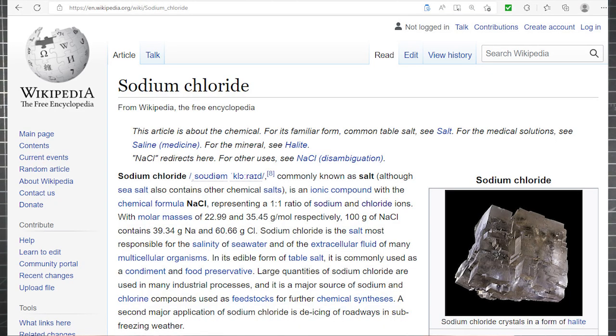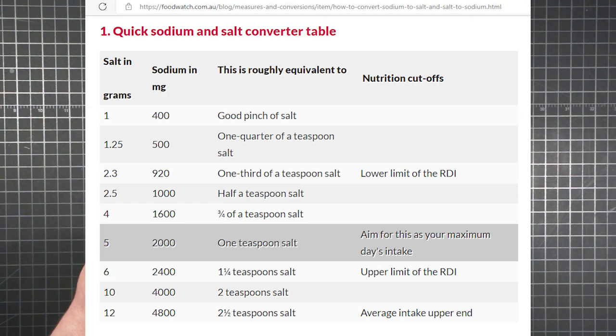Common salt, sodium chloride, works out by weight to a ratio of about 40-60, meaning for every 100 grams of salt, there's about 40 grams of sodium and 60 grams of chloride. FoodWatch has a quick converter table. One teaspoon of salt contains about 2,000 milligrams of sodium, the amount in two element packets.